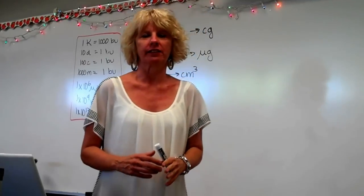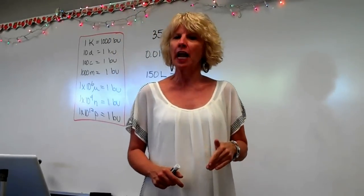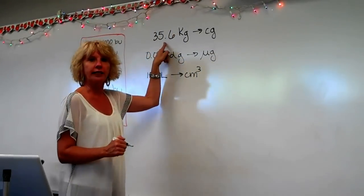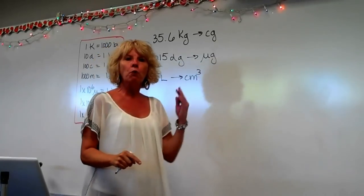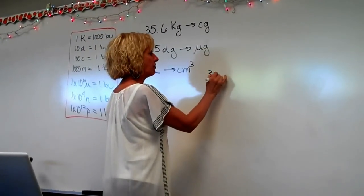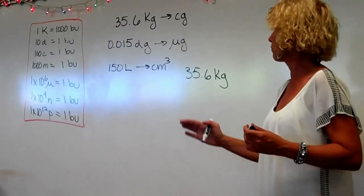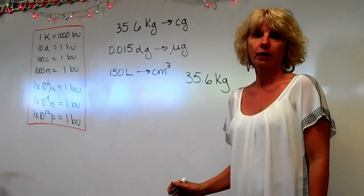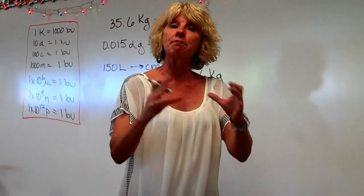We want to learn how to use unit analysis in order to change from one metric unit to another. To solve any problem in chemistry, the first thing we're going to write down is the given. I do not expect you to memorize how to go from kilograms directly to centigrams — we're always going to go through the basic unit, which is grams: the unit without a metric prefix.